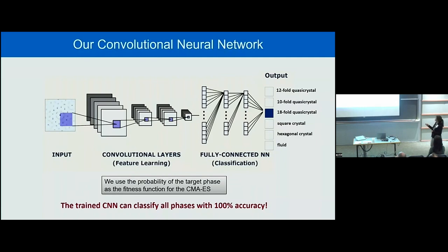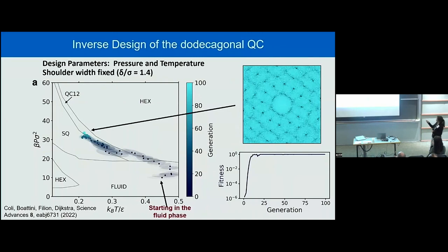We start with a simple system that gives a quasicrystal in the pressure-temperature plane. Using an evolution strategy, we start with a Gaussian distribution somewhere in the fluid phase and take N combinations of pressure-temperature from this Gaussian distribution. We run simulations for those N different combinations, take the diffraction patterns, and feed them into the neural network, which gives the probability of belonging to the quasicrystal phase. We then update the Gaussian distribution to move toward higher quasicrystal probability. The probability starts extremely low — 10^-6 — in the deep fluid phase, but within 10 generations it really goes to one. This works very well for many different crystal structures and for liquid crystals.